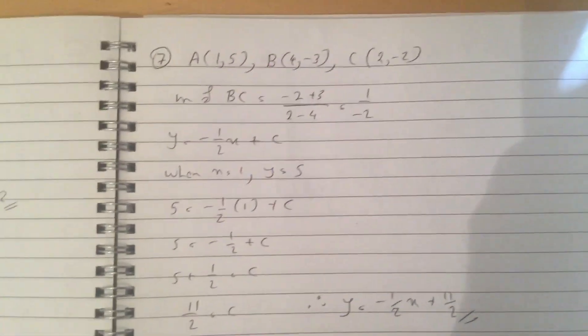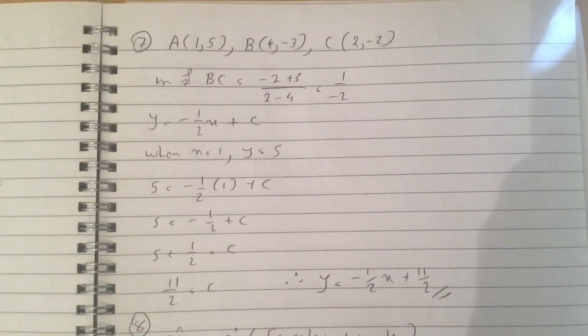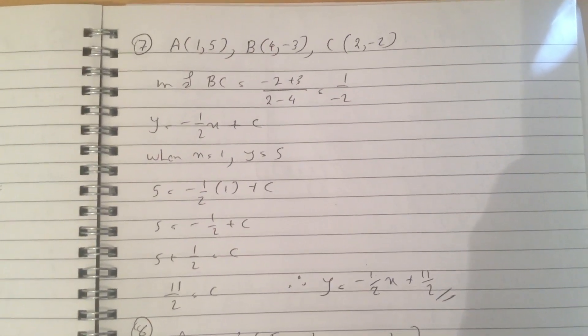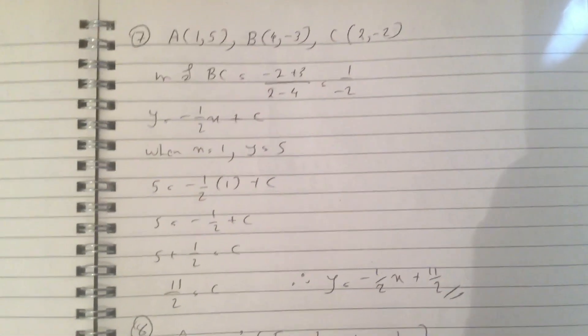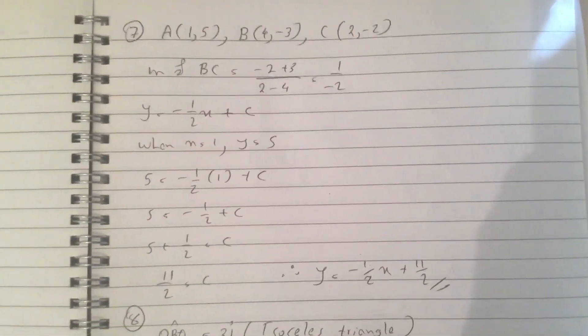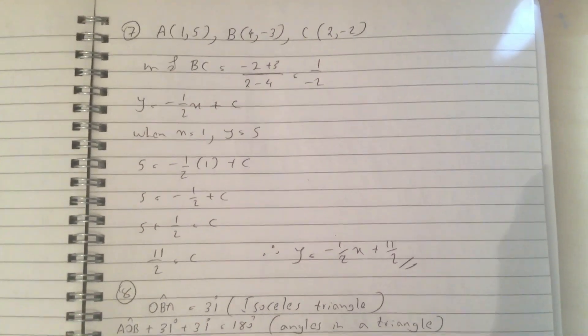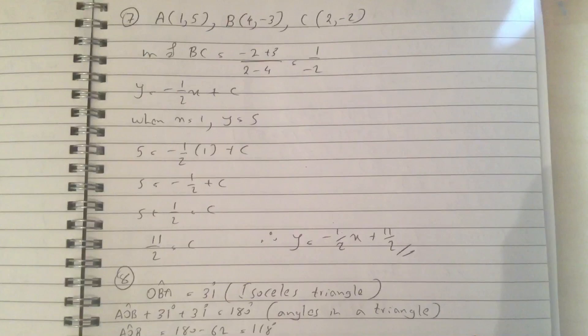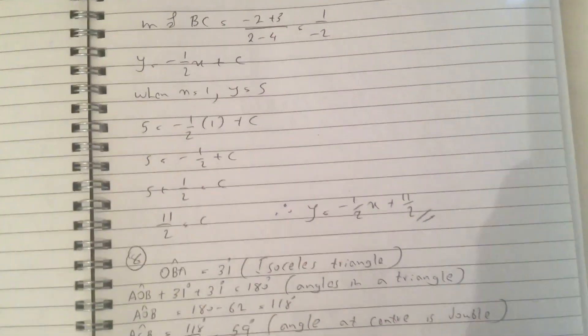Question 7, so we've got ABC. The gradient of ABC is minus 2 plus 3 over 2 minus 4, which is minus half, so it becomes Y equals minus half X plus C. And then you sub in point A, because they want the line parallel to BC through A, and you get C equals to 11 over 2. So the final answer is Y equals minus half X plus 11 over 2.